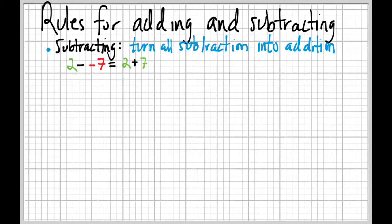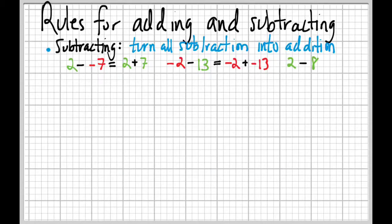We always want a plus sign, and we flip the sign of the number being subtracted. For negative two minus thirteen: some people can do that in their head, but if you get confused, turn it into addition — negative two plus negative thirteen. Subtracting is the same as adding a negative. And two minus eight becomes two plus negative eight. Now that subtraction is turned into addition, we can apply our addition rules.